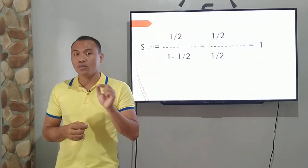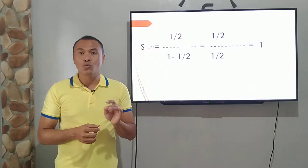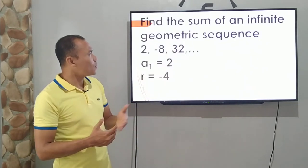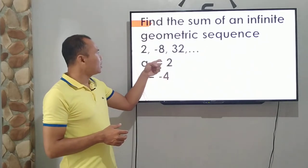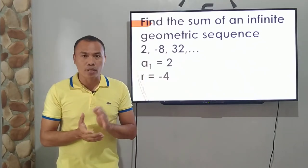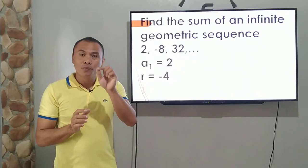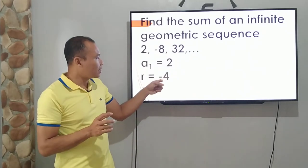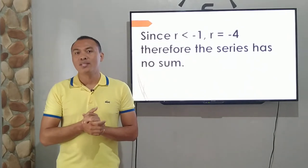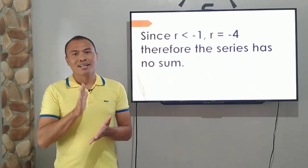You'll just need to identify the value of r. Pag ang r mo ay kumasok siya doon sa kondisyon na negative 99 hundredths to 99 hundredths positive, pwede na natin gamitin ang formula. Let's try another one. Find the sum of an infinite geometric sequence. Negative 8 divided by 2 is negative 4. Ang negative 4 ba ay pasok? Kasi dapat ang value ng r natin ay negative 99 hundredths to positive 99 hundredths. Pasok ba ang negative 4? Hindi siya pasok. Ibig sabihin, kung hindi siya pasok, therefore, the series has no sum. We cannot compute kasi yung condition niya did not satisfy the value of r.